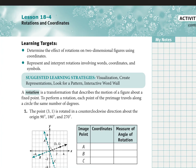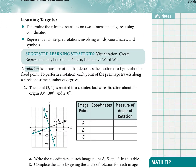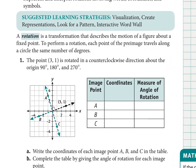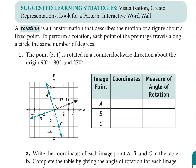Let's talk about another transformation — the rotation — and see if we can get some patterns going with the coordinates. We have a rotation, which is a transformation that describes the motion of a figure about a fixed point. Generally, we're going to do rotations about the origin, which is where the x and y axes meet, and use that as our point of rotation.